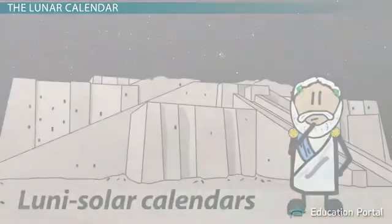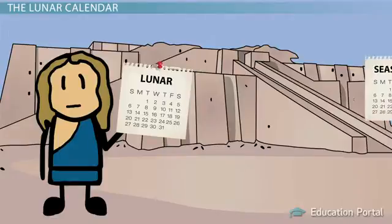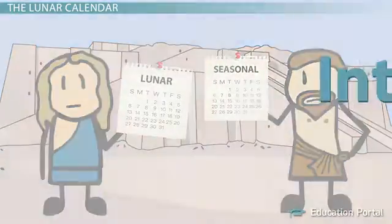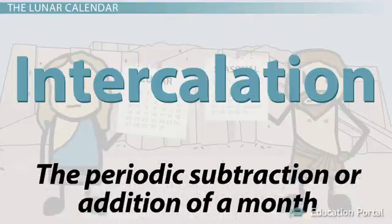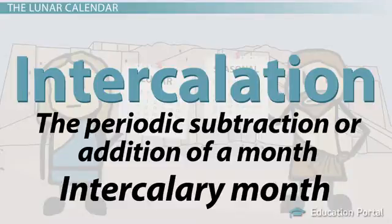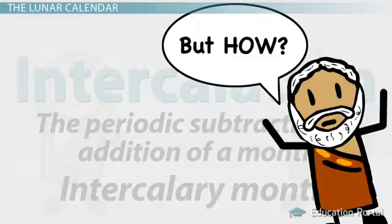Since the lunar calendar and seasonal year don't match up very well, luni-solar calendars use a process called intercalation to rectify any differences. Intercalation is the periodic subtraction or addition of a month, and such a month is called an intercalary month. But how do you determine when to add or subtract an intercalary month?